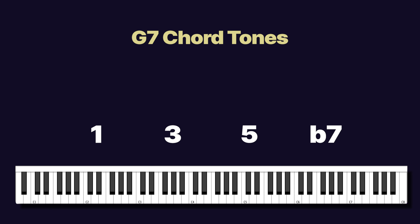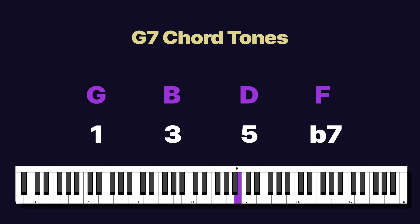In our G7 chord tones we have our one which is G, our third which is B, our fifth which is D, and our flat seven which is F. That B and F — the third and flat seven — creates our tritone.